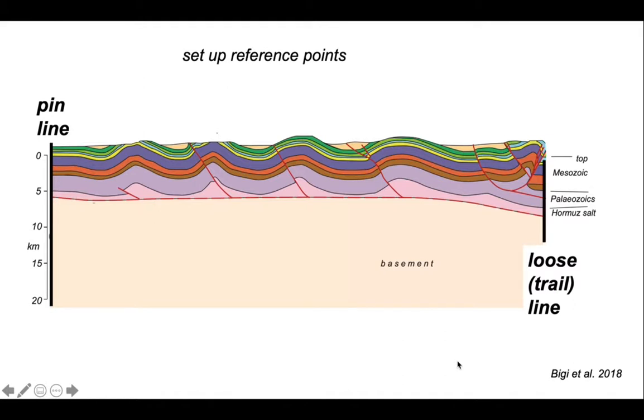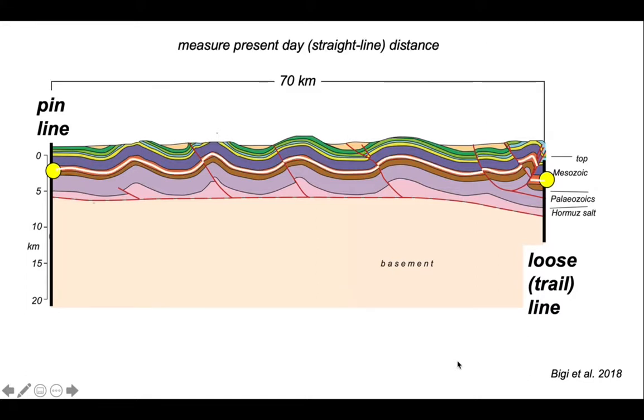We're going to worry about that orange horizon, which is a unit within the Mesozoic strata. And we're going to measure between two points, one on the pin line and one on the loose line.